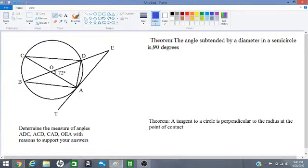Let's start with part one, finding ADC. First locate the angle - going from A to D to C means the angle is located here at D, which is the middle letter. We are using the theorem: the angle subtended by a diameter in a semicircle is 90 degrees.